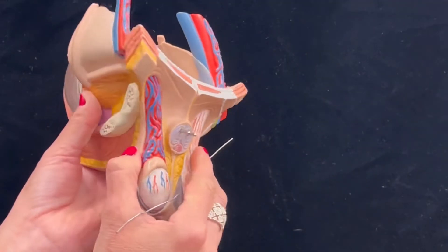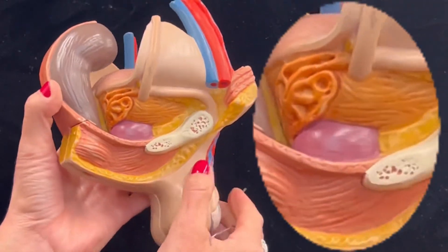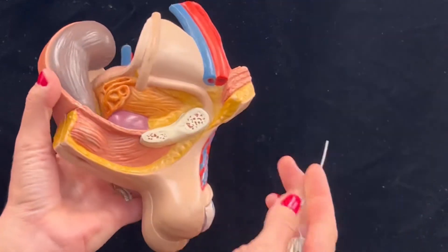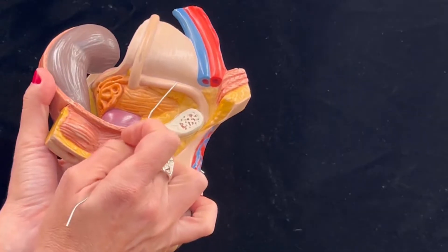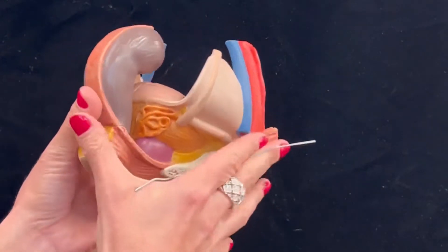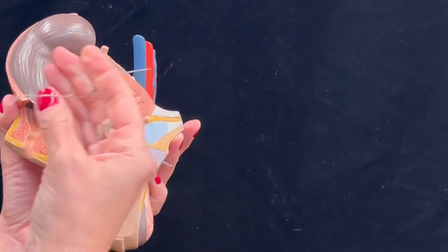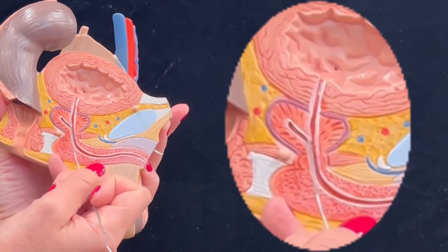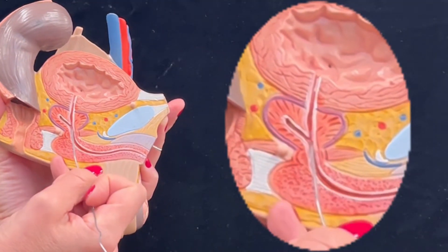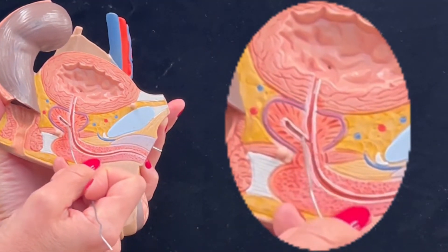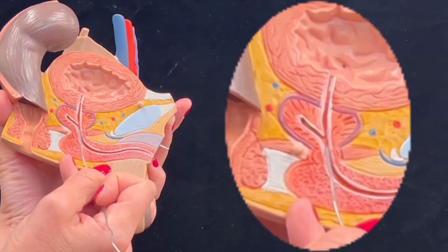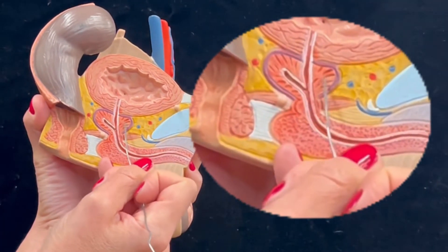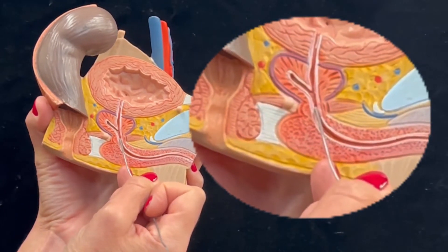If we go posteriorly, we can see here the prostatic gland and the seminal gland. We also see the ductus deferens that brings the sperm all the way behind the male urethra and bladder. And then here we have the ejaculatory duct that brings the sperm and the semen secretions towards the prostatic urethra — the portion of the urethra that goes through the prostate — and then the membranous urethra.